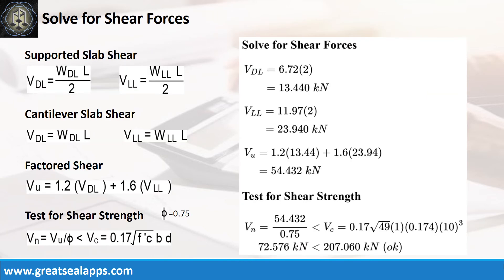The shear force from dead load is 13.44 kN, and live load is 23.94 kN, for a factored shear force of 54.432 kN. The nominal shear force is 72.576 kN, less than 207.06 kN, concrete capacity.